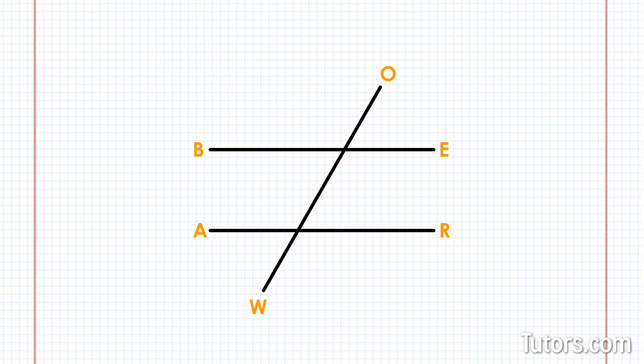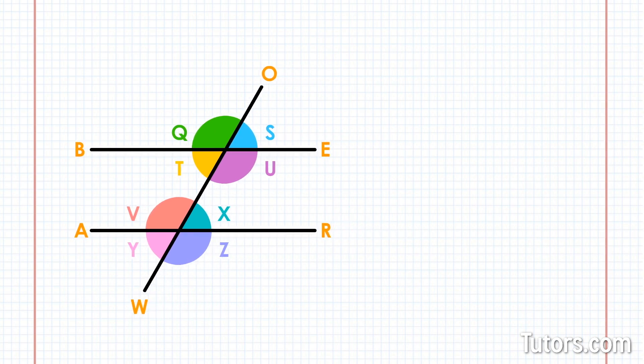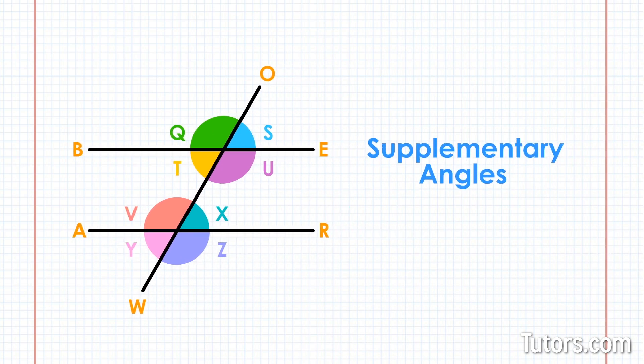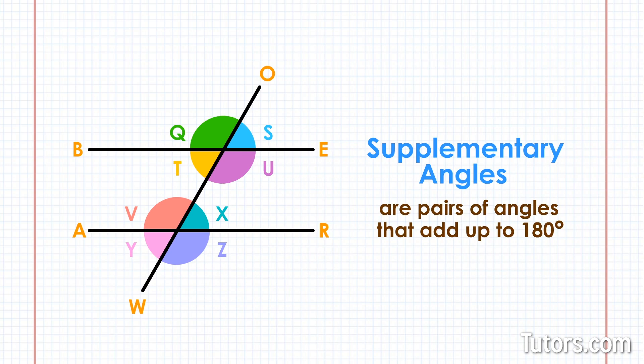Our transversal OW created eight angles where it crossed BE and AR. These are called supplementary angles. What are supplementary angles? Supplementary angles are pairs of angles that add up to 180 degrees. Because all straight lines are 180 degrees, we know that angle Q and angle S are supplementary. Together, the two supplementary angles make half of a circle.